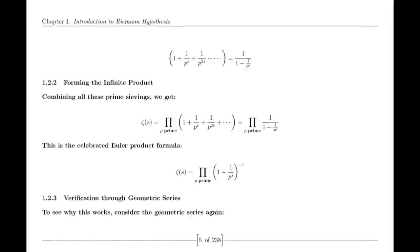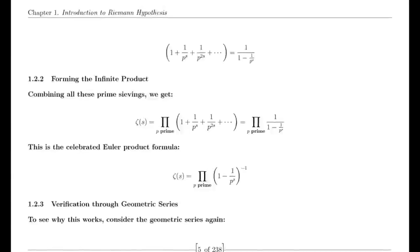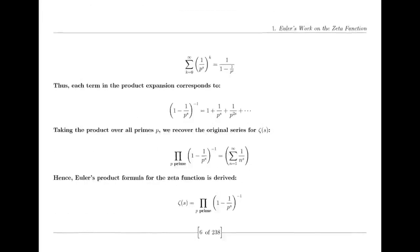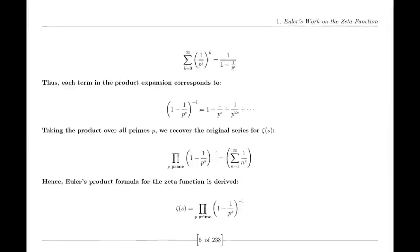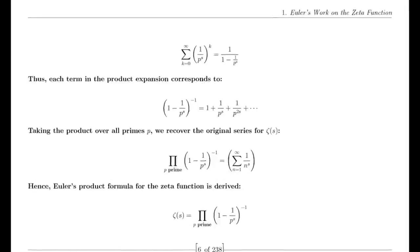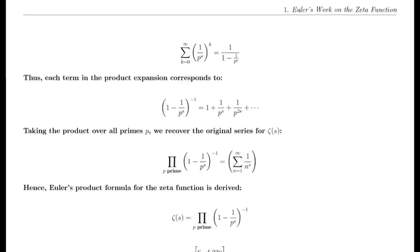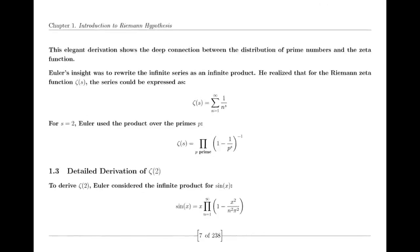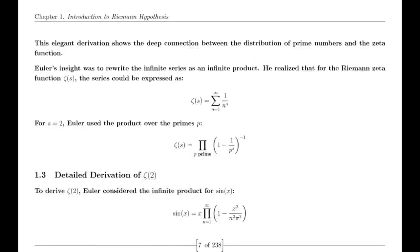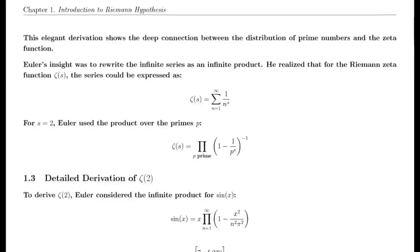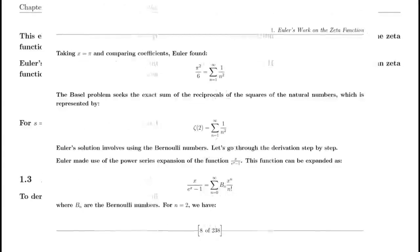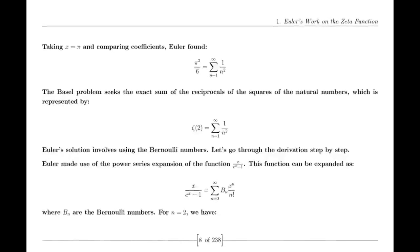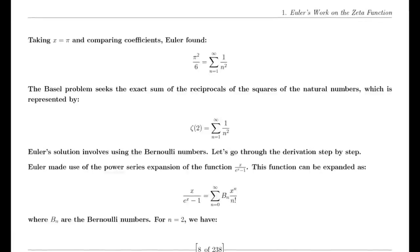Riemann also made use of the Jacobi theta function, which has significant applications in various areas of mathematics. The theta function's series representation and modular properties were instrumental in Riemann's derivation of the functional equation for the zeta function, which is crucial for understanding the zeta function's behavior across the complex plane.